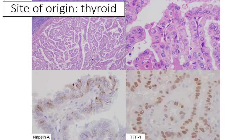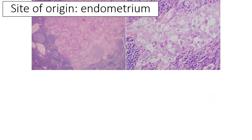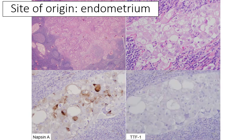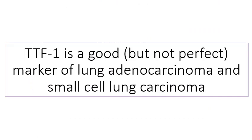For thyroid origin, you might expect TTF1 to be positive but napsin negative — however, papillary thyroid carcinomas are known to be positive for napsin A in a small proportion of cases. So the combination of TTF1 and napsin does not always prove lung origin, but showing PAX8 negativity is very helpful. For endometrial metastases — in this case to the inguinal lymph nodes — napsin was positive and TTF1 was negative. We were among the first to show that napsin A can be positive in endometrial adenocarcinomas, subsequently confirmed in larger series. GYN primaries can occasionally even be positive for TTF1, so PAX8 is again very helpful.